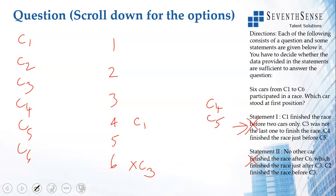If I use statement 2, no other car finished the race after C6. I can put C6 here which finished the race just after C3. So, I have C1, C3 and C6.